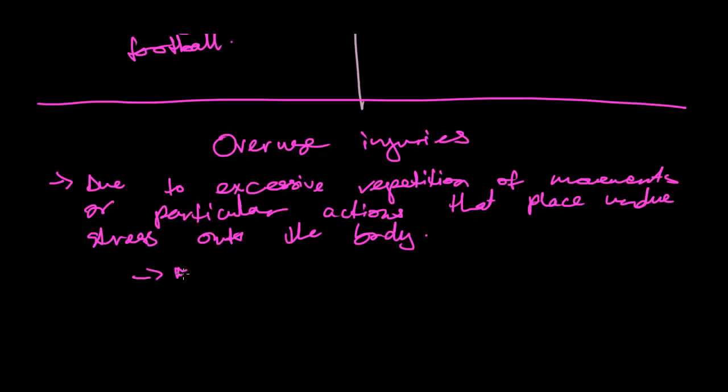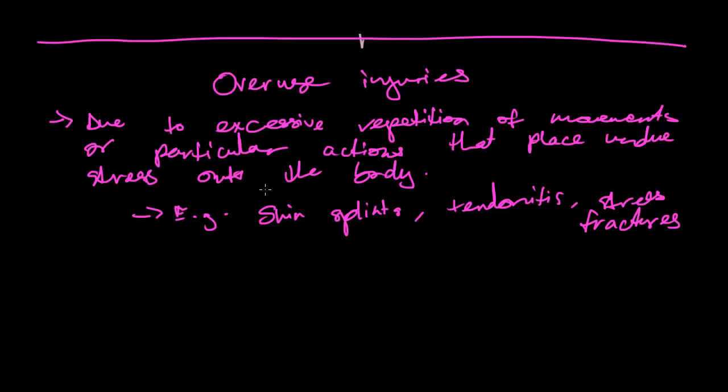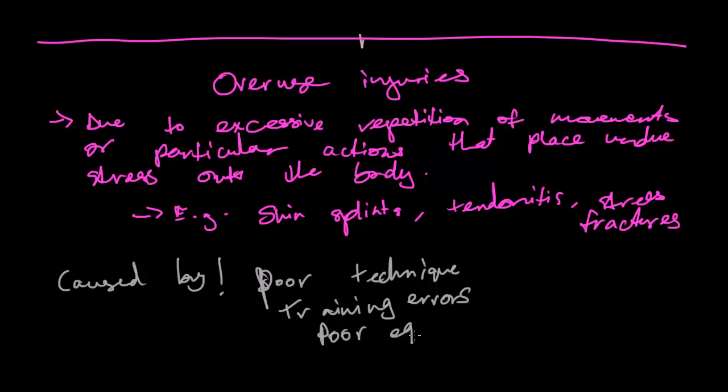So that's it pretty much. And what examples can we give? Okay. We've got shin splints. So that's like when all the scar tissue forms. Then we've got stuff like tendonitis, which is just another example. And then we've got stuff like stress factors. That's another one. And now, as I said, it's all caused by stuff like poor technique, training errors, or even poor equipment. So, okay, that's overuse injuries done and dusted. That's all you need to know.